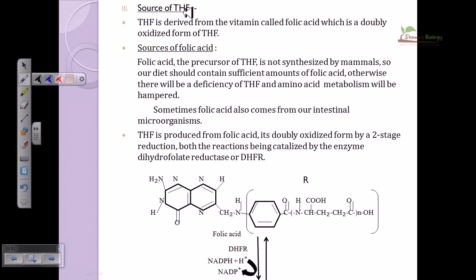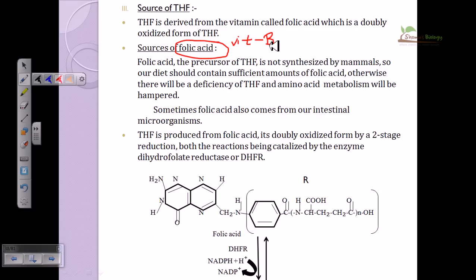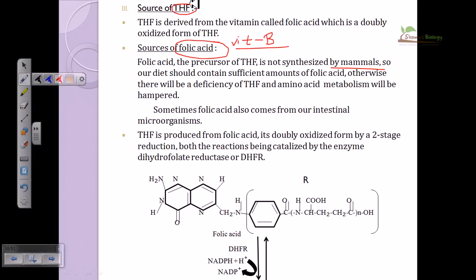The source of tetrahydrofolate is folic acid, which is a type of vitamin B. Vitamin B is a precursor of THF and is not synthesized by mammals — we cannot synthesize most vitamins on our own. So we need to obtain vitamins from external sources. Without sufficient vitamin B intake, folic acid levels drop, inhibiting THF production and causing trouble in amino acid metabolism.